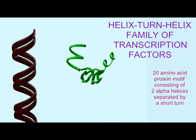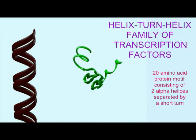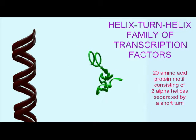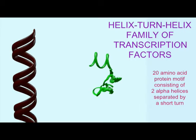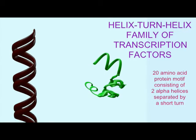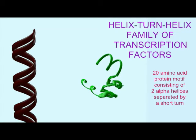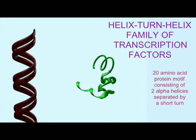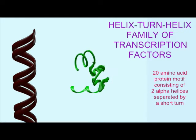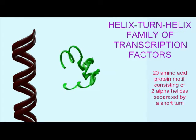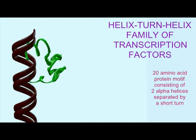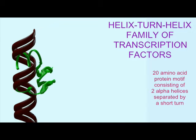The first transcriptional regulators discovered in bacteria were found to have similar DNA binding regions. There were two alpha helices separated by a short turn. This is known as the helix-turn-helix motif and is only about 20 amino acids long.